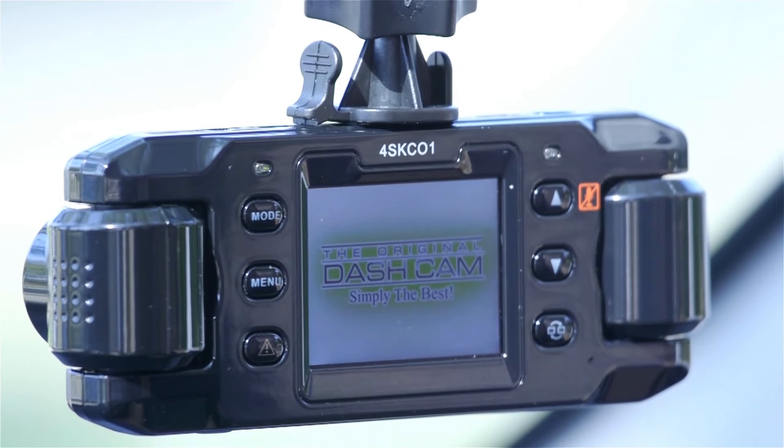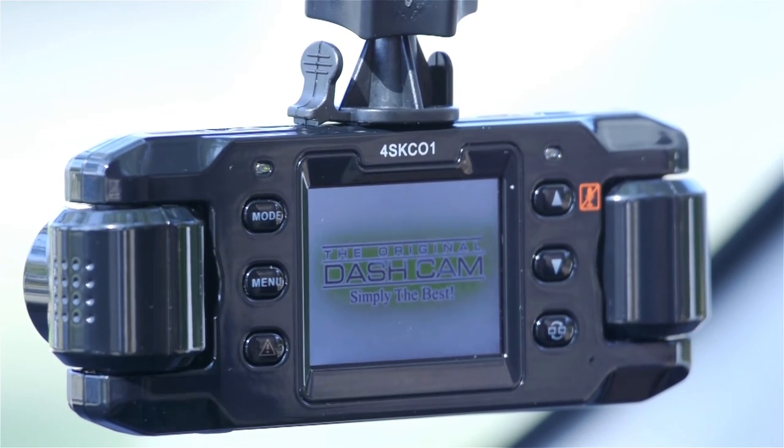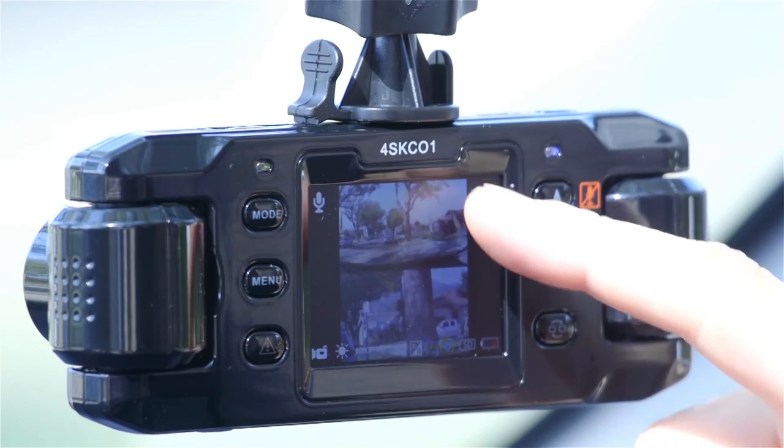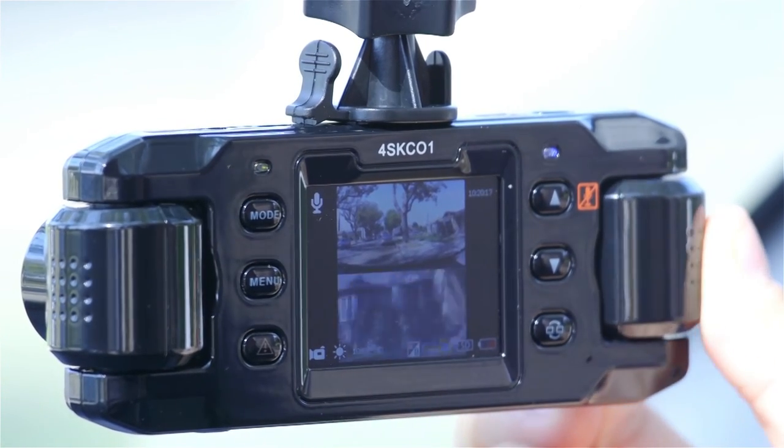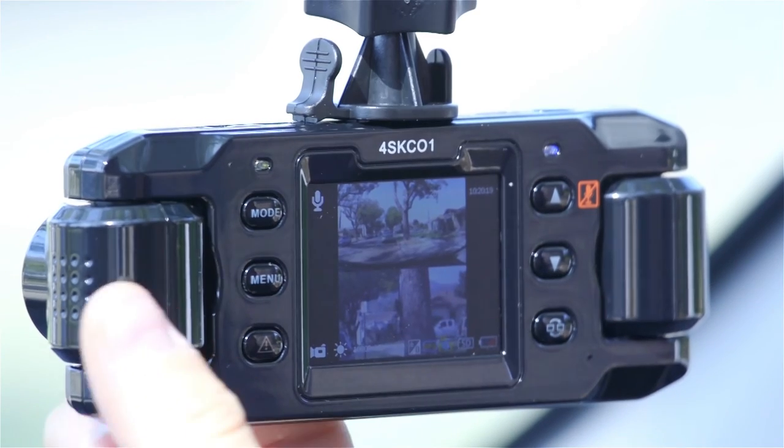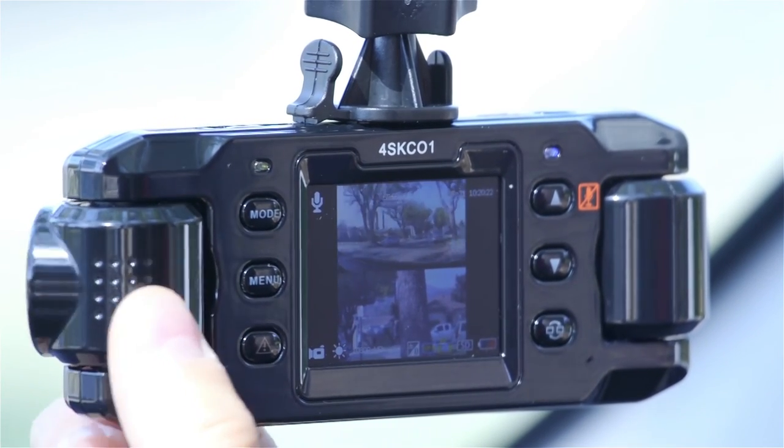I've attached the dashcam plus 2 to my windshield using the suction cup mount. When it turns on, we can see both video sources displayed simultaneously on the LCD display. To show you the differences in the lenses, I'll rotate the telescopic lens first, followed by the wide angle lens.